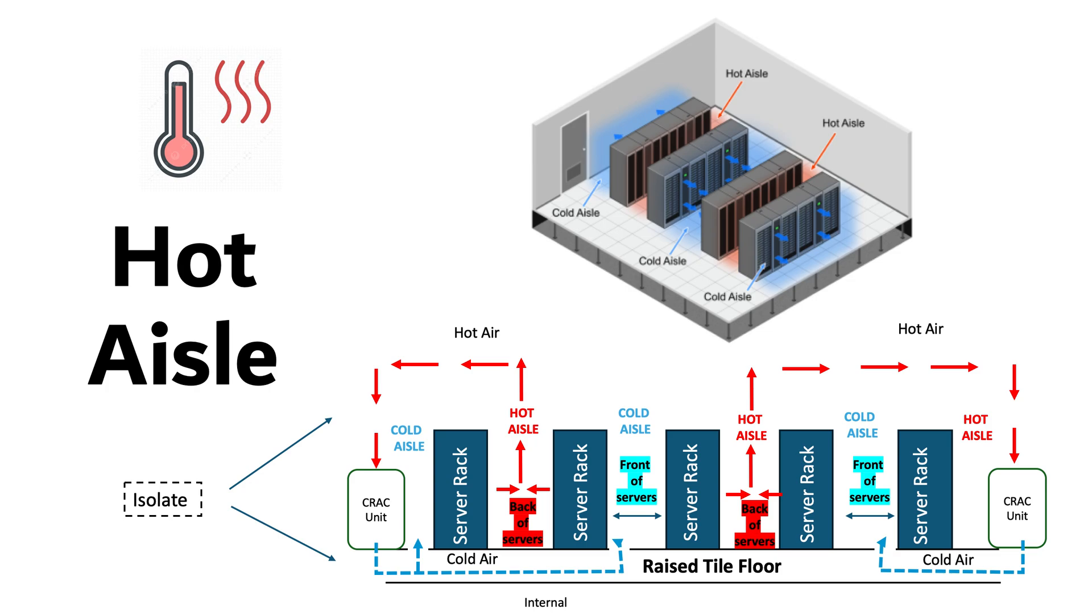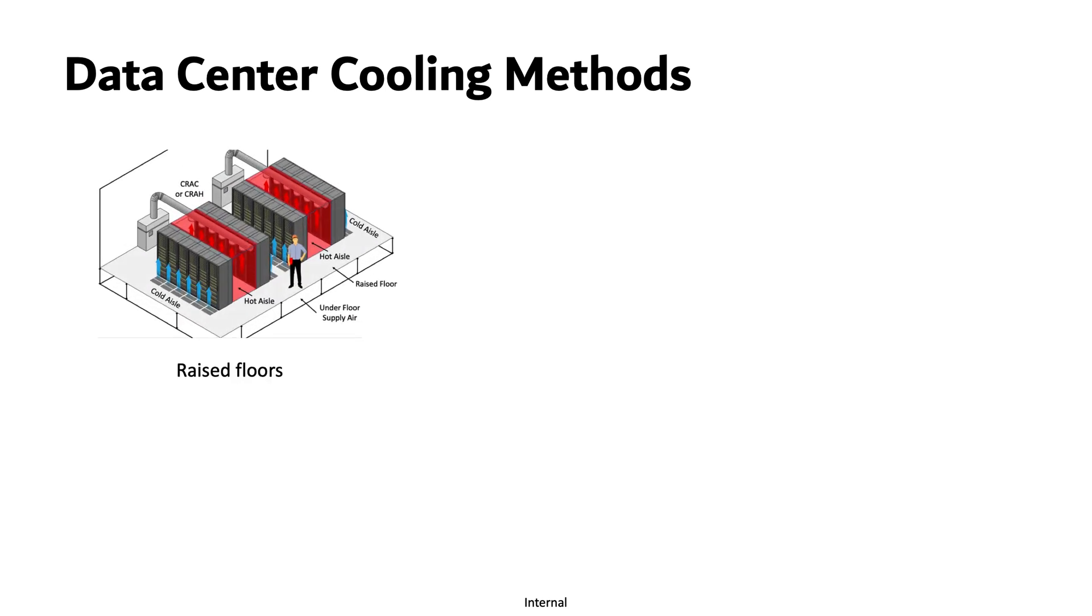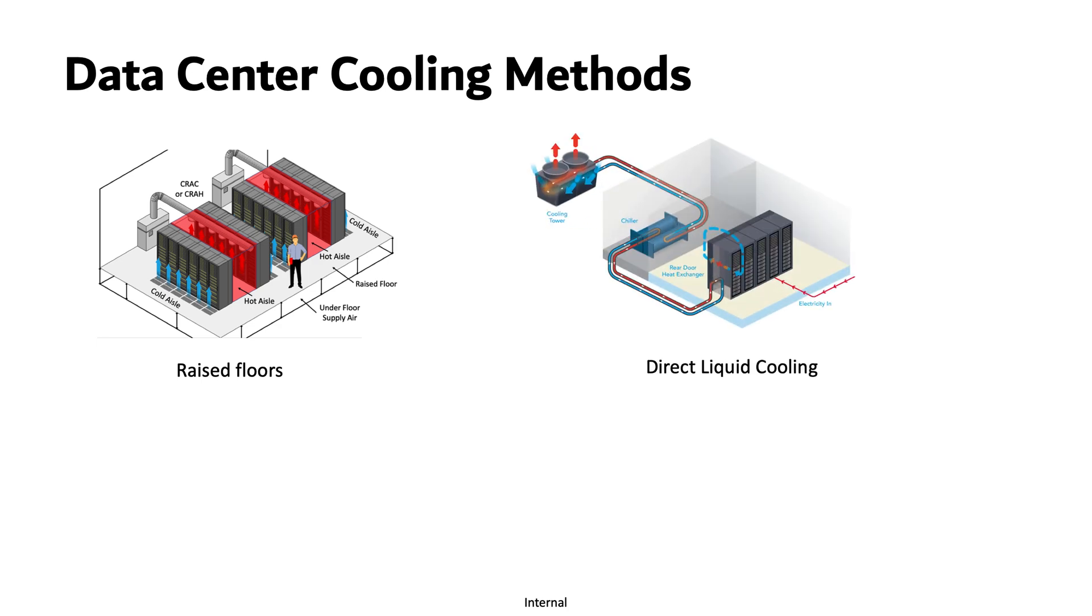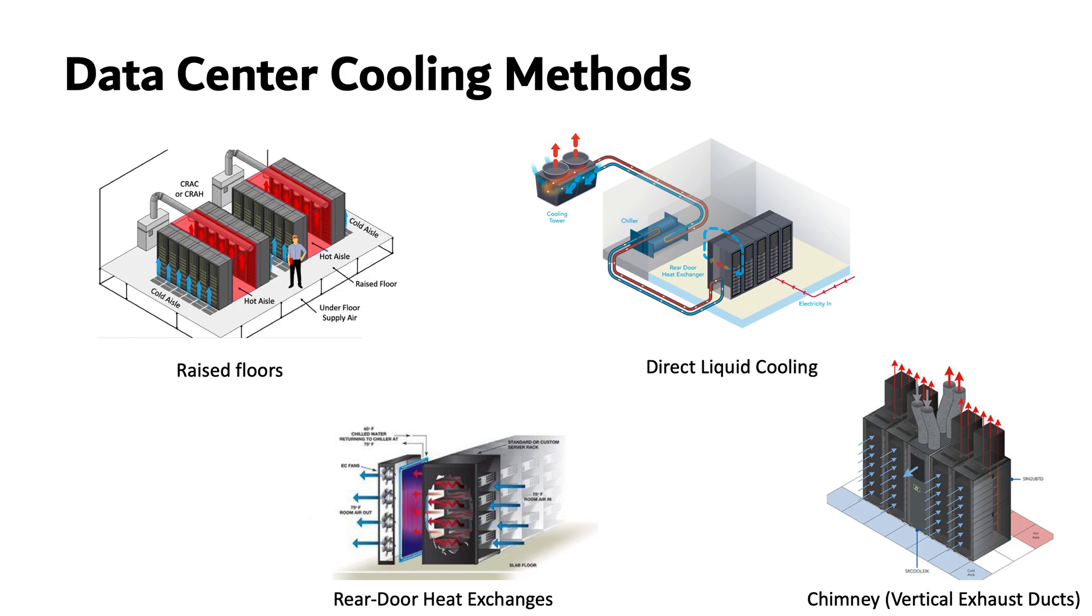There are different cooling methods available such as the traditional one, raised floors. The second one is direct liquid cooling. The third one is rear door heat exchanges, and then we have chimney or vertical exhaust ducts. There are other ways as well. The choice of the method depends on the data center's density, cooling requirements, and infrastructure flexibility.